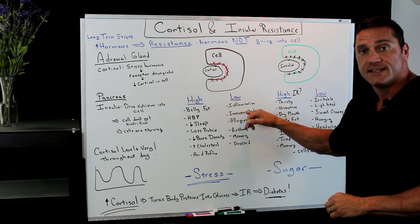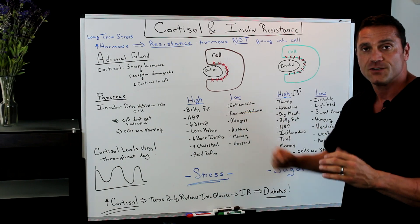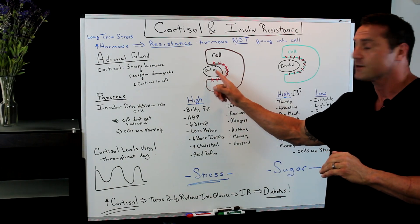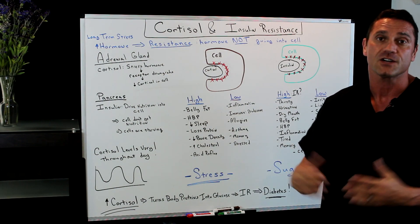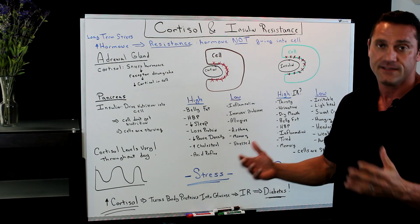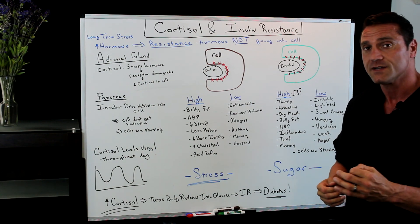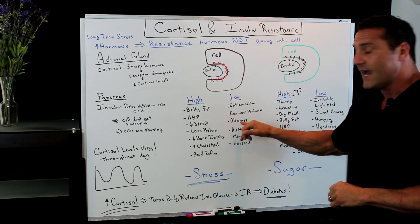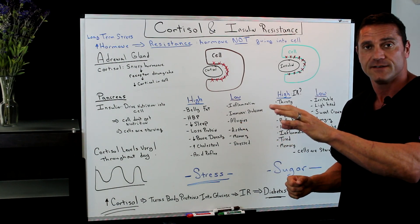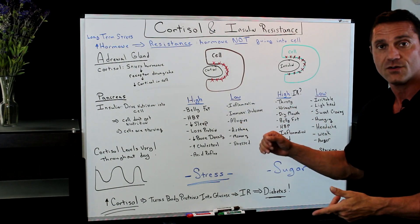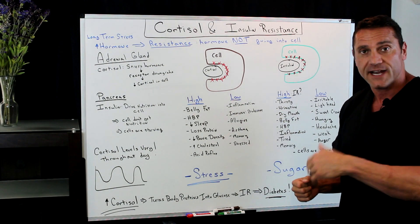You have an immune response. If you don't have enough cortisol going to the cell, what do they give you? They give you prednisone. People in chronic pain and stressed out get prednisone, which is cortisol. Also allergies, because what is allergy? Allergy is an inflammatory response. If you have low cortisol getting to the cell, this is where allergies occur.